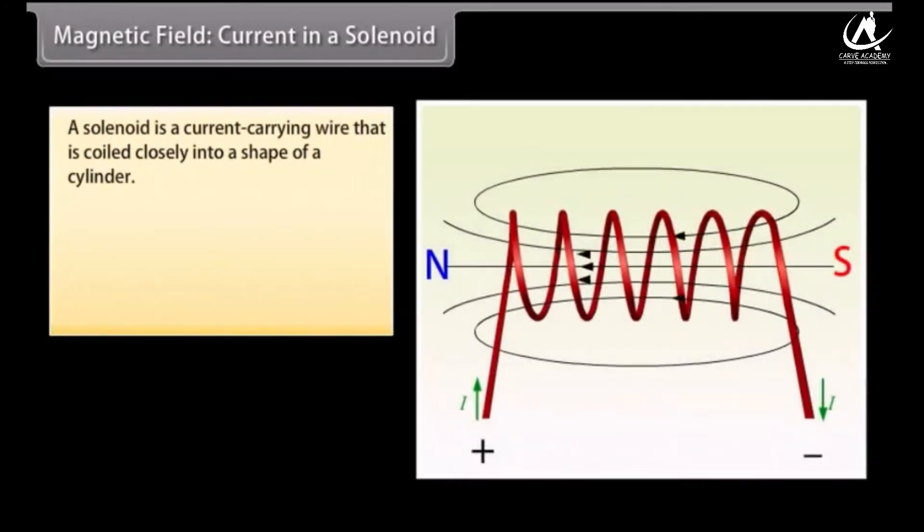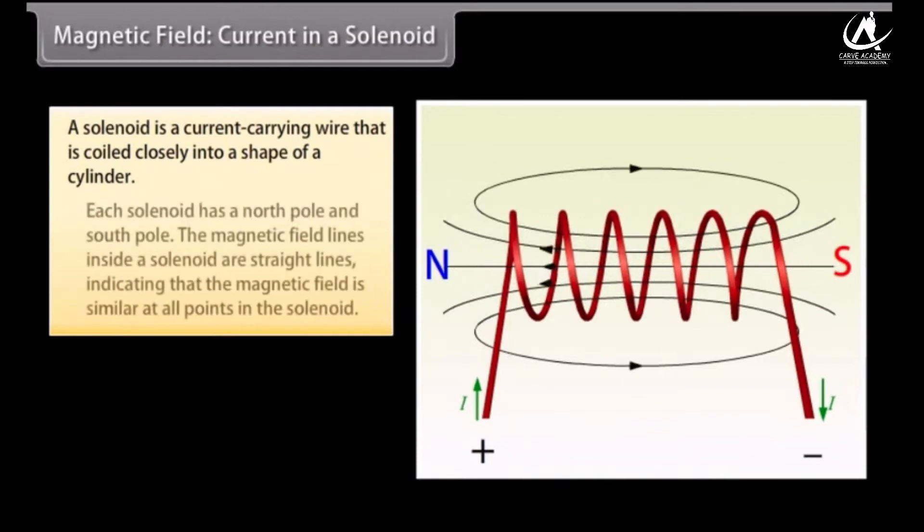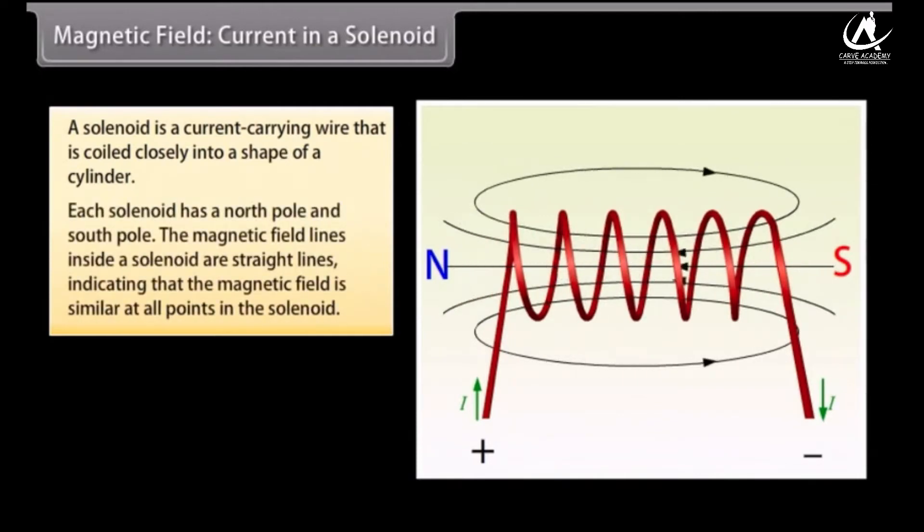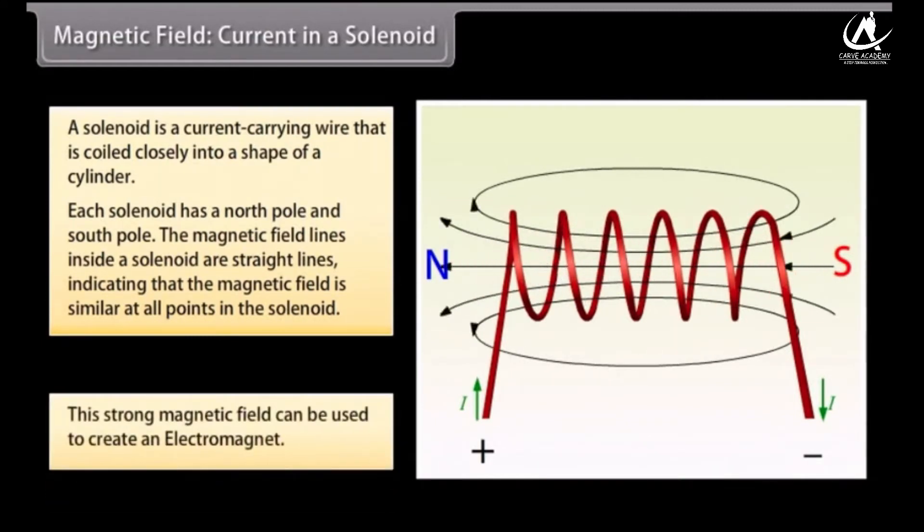Magnetic field current in a solenoid. A solenoid is a current carrying wire that is coiled closely into a shape of a cylinder with the turns as close together as possible. This is similar to a bar magnet. Each solenoid has a north pole and south pole. The magnetic field lines inside a solenoid are straight lines and indicate that the magnetic field is similar at all points in the solenoid. This strong magnetic field in the solenoid can be used to magnetize magnetic materials. This type of a magnet is called an electromagnet.